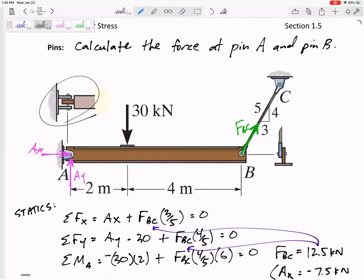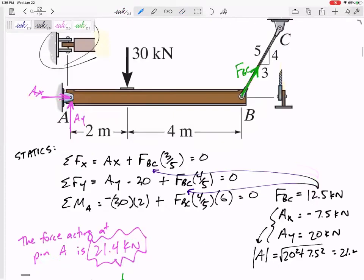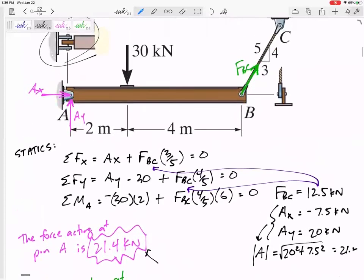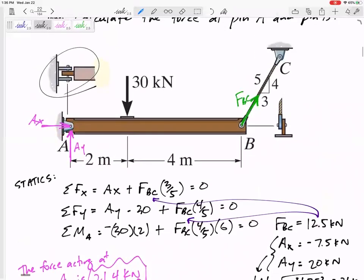then the shear stress would be 21.4 divided by two, right? Because that side view showed you it was in double shear.